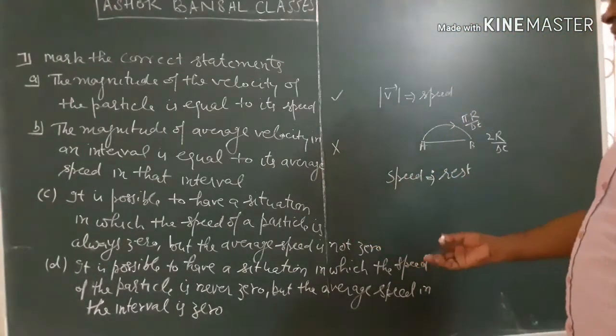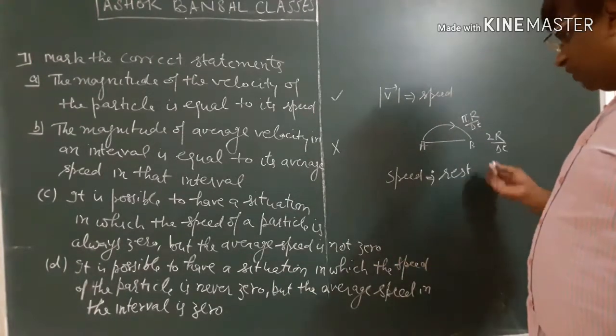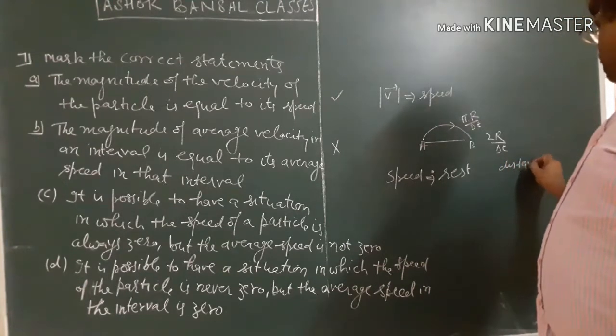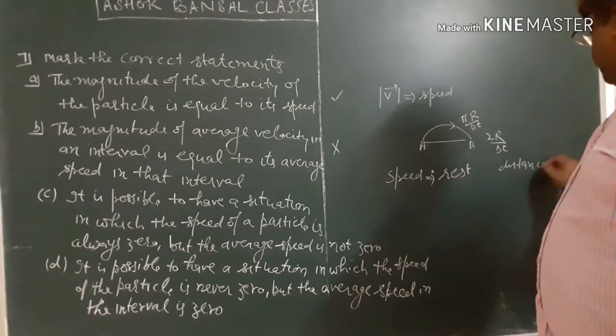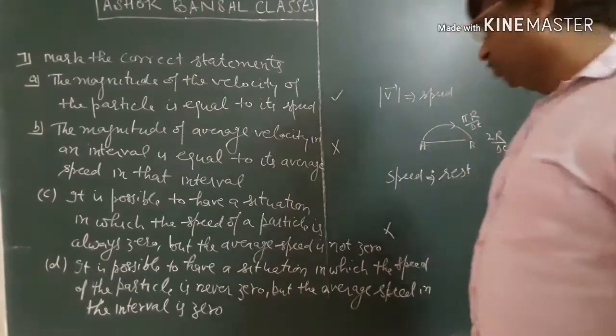The average speed is not zero if the particle is moving. If the distance is zero, the average speed is zero. This is wrong.